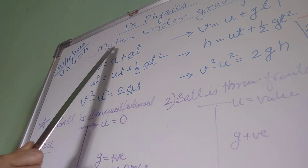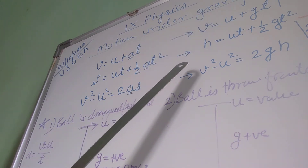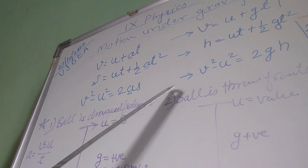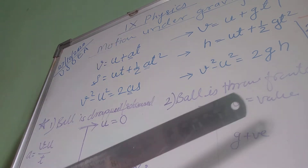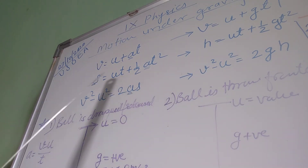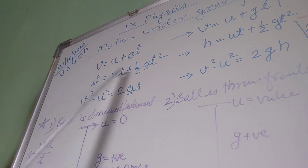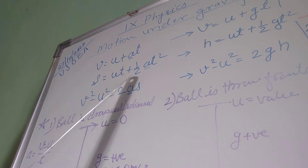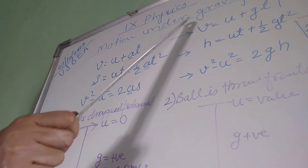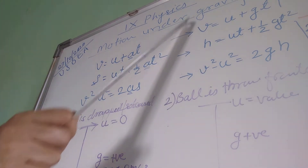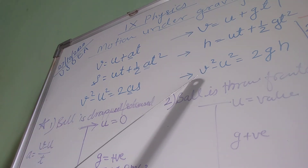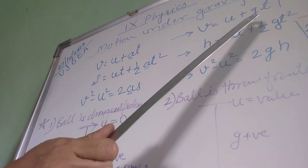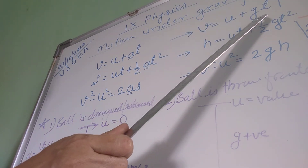Now here we are going to see the motion under gravity. Motion under gravity means it will be a vertical motion, which is governed by the gravitational force. Whatever acceleration was there before was due to the force applied by the engine of the vehicle. Here, the force applied in a vertical direction will be the gravitational force, and hence there will be acceleration due to gravitation.